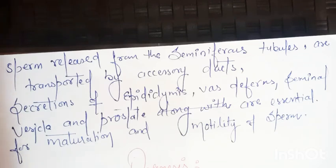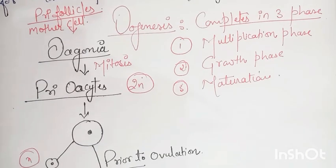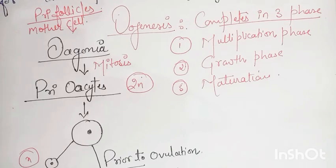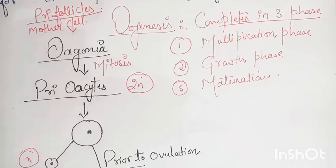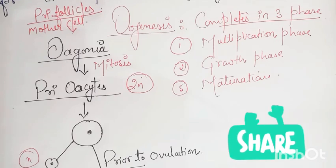The next process is oogenesis. The process of formation of a mature female gamete is called oogenesis. This is the second part of the term gametogenesis that is very different from spermatogenesis. Oogenesis is initiated during the embryonic development stage when a couple of millions gamete mother cells or oogonia are formed within each fetal ovary. After birth, there is no more oogonia formation.